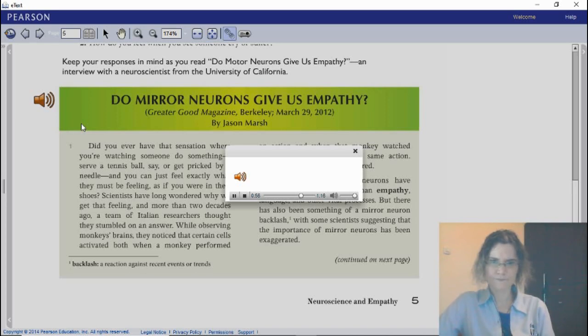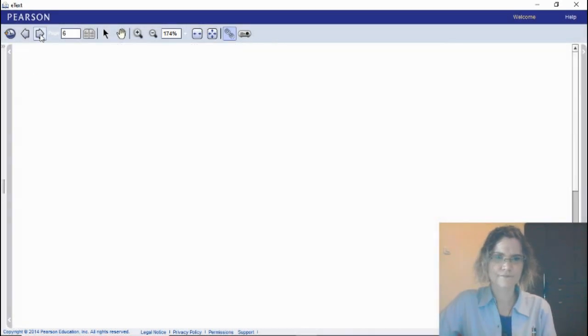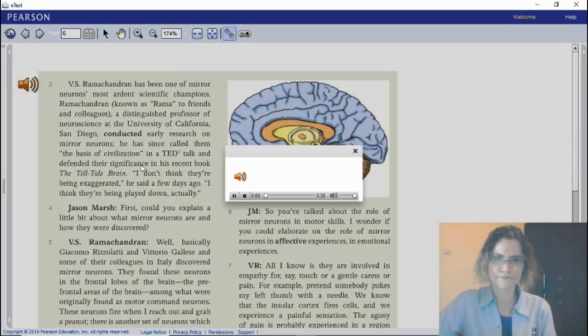While observing monkeys' brains, they noticed that certain cells activated both when a monkey performed an action and when that monkey watched another monkey perform the same action. Mirror neurons were discovered. Since that time, mirror neurons have been hailed as a key to human empathy, language, and other vital processes. But there has also been something of a mirror neuron backlash, with some scientists suggesting that the importance of mirror neurons has been exaggerated.